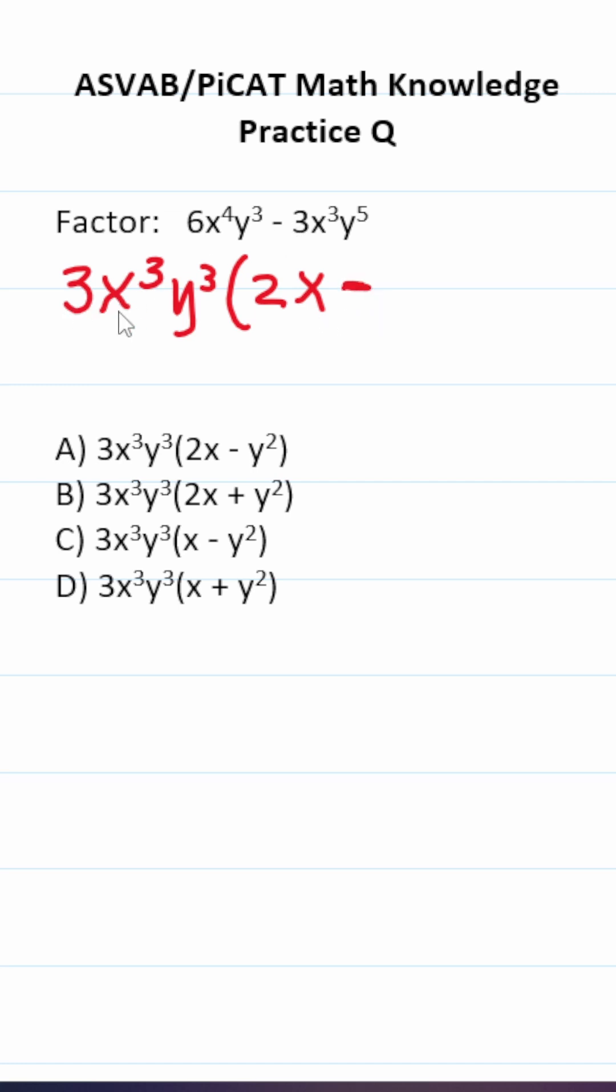We already have a 3. We already have x^3. To make y^3 into y^5 this has to be y^2. All right so that is the answer to this one and clearly that is answer choice A in this case.